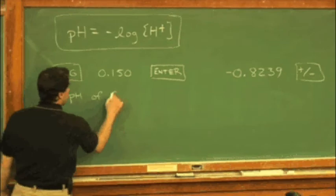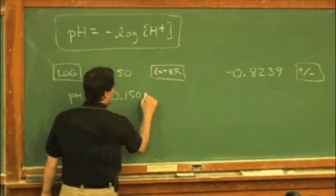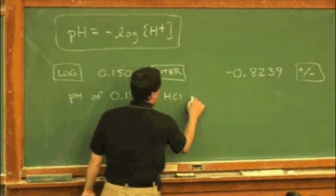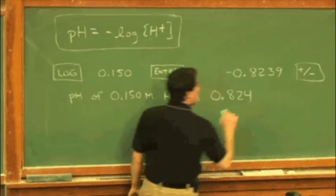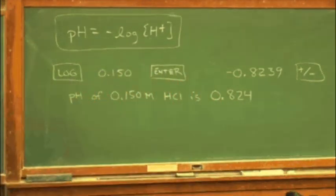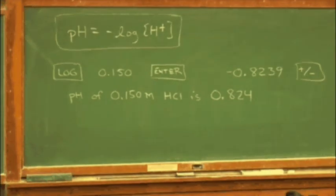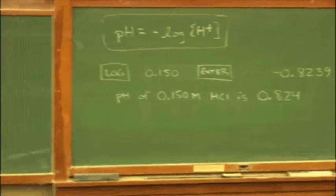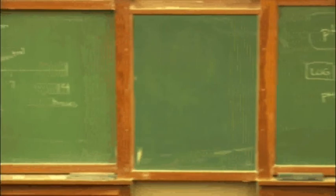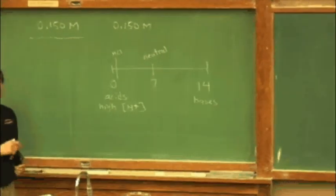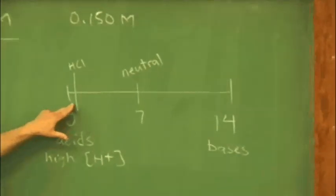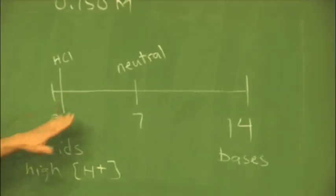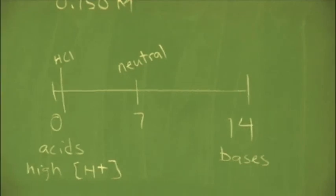And the pH of 0.150 molar HCl is positive 0.8239. I'm going to call it 4 there to go to three significant figures. On the pH scale, that appears way down towards the 0 over here. I'm going to make a little note here that this is for the HCl. In particular, for HCl that has a concentration of 0.150. So the HCl is fairly close to zero. Pretty acidic stuff.